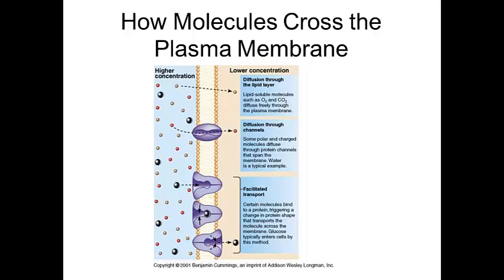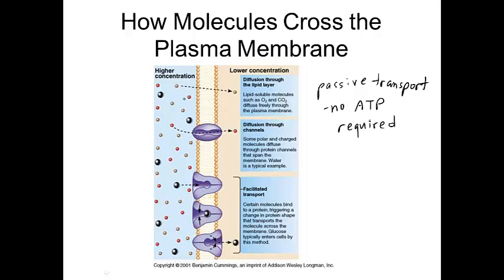Some examples show particles moving into the cell in a passive way — passive transport means no energy, no ATP required. Some very small molecules like O2 and CO2 can diffuse directly through the membrane. In some cases, polar and charged molecules, such as ions, diffuse through channel proteins. As long as they're working with the concentration gradient, they can do this; otherwise, they need to be pumped across, which would require energy.